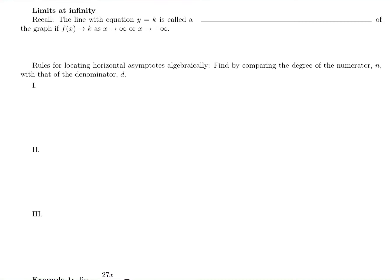We're going to look at limits as x goes to infinity. We want to remember that the line y equals k is called a horizontal asymptote of the graph, as long as the y value is going to k as x is going to infinity or negative infinity.